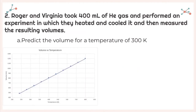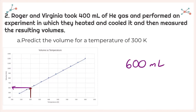For number two, it says Roger in Virginia took 400 milliliters of helium gas and performed an experiment in which they heated and cooled it and measured the resulting volumes. You're given a set of data and asked to plot it — I have already plotted it for us. For part A, it says predict the volume for a temperature of 300 degrees Kelvin. It's right there — let's see what volume that corresponds to. It's about 600 milliliters. So my new volume is going to be 600 milliliters.